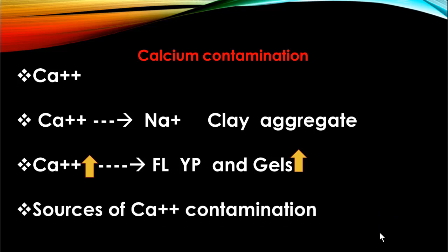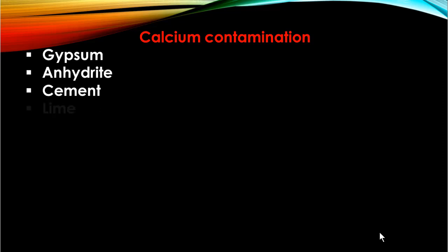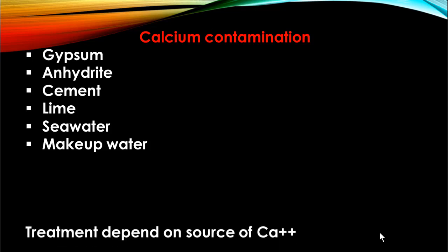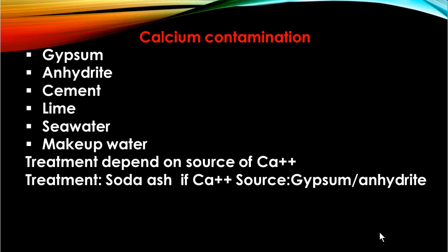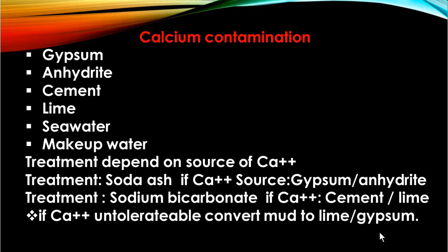Calcium ions may enter into the mud system from different sources like gypsum, anhydrite, cement, lime, sea water, and hard makeup water. Treatment depends on the source: sodium carbonate (soda ash) is used if the source is gypsum or anhydrite; sodium bicarbonate is the preferred treatment if the calcium ion is from lime or cement. If treatment becomes economically unacceptable, break over to a mud system such as gypsum mud or lime mud that can tolerate calcium ion contamination. Calcium ion contamination is not usually a problem with gypsum drilling fluid — they are compatible.